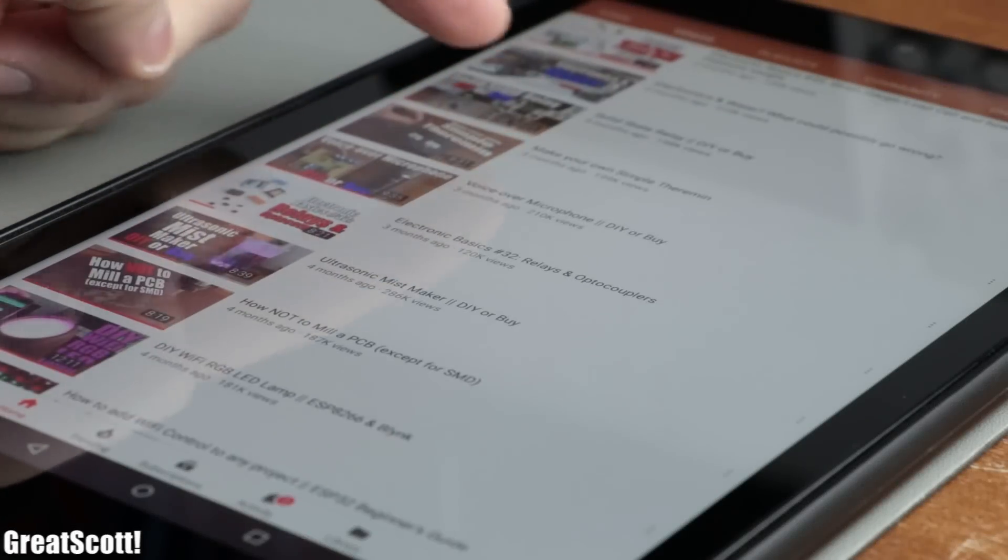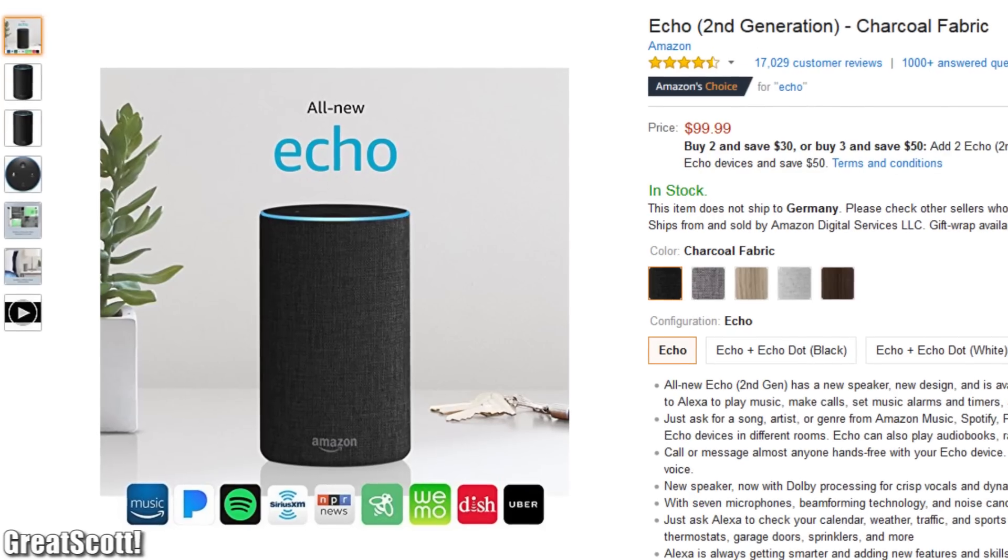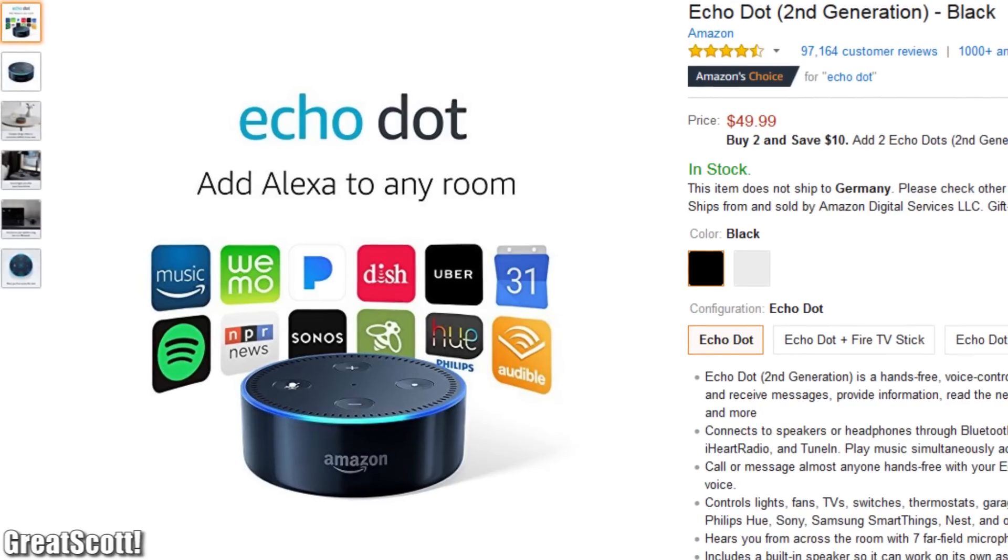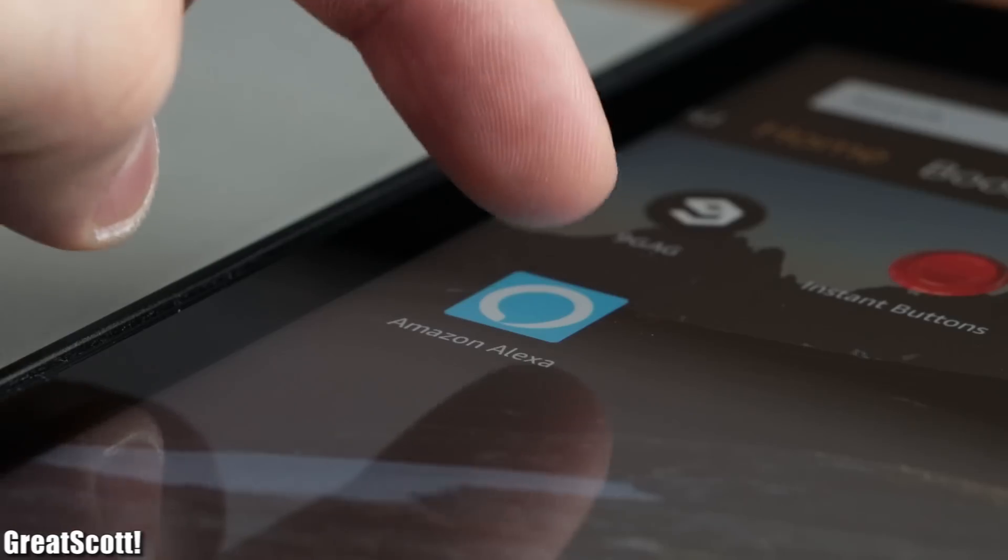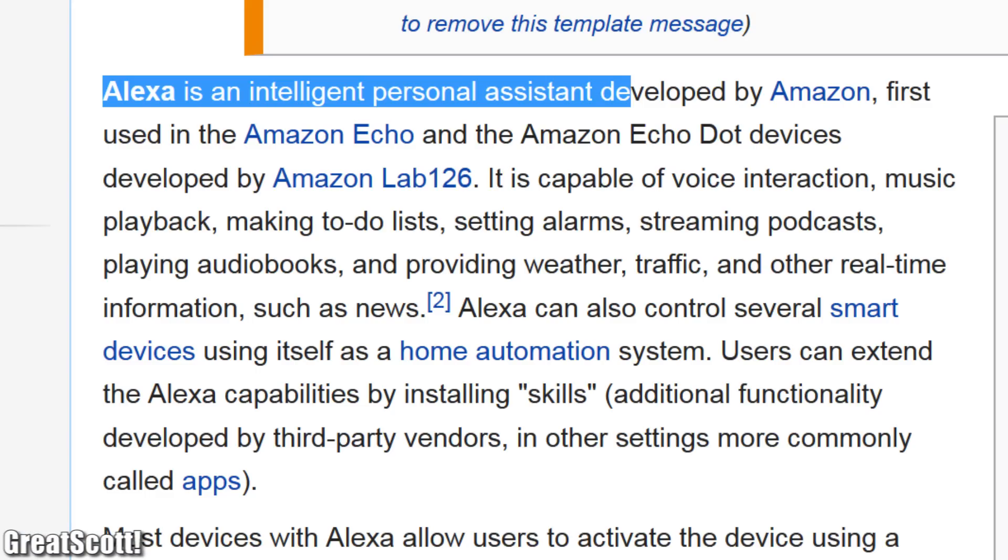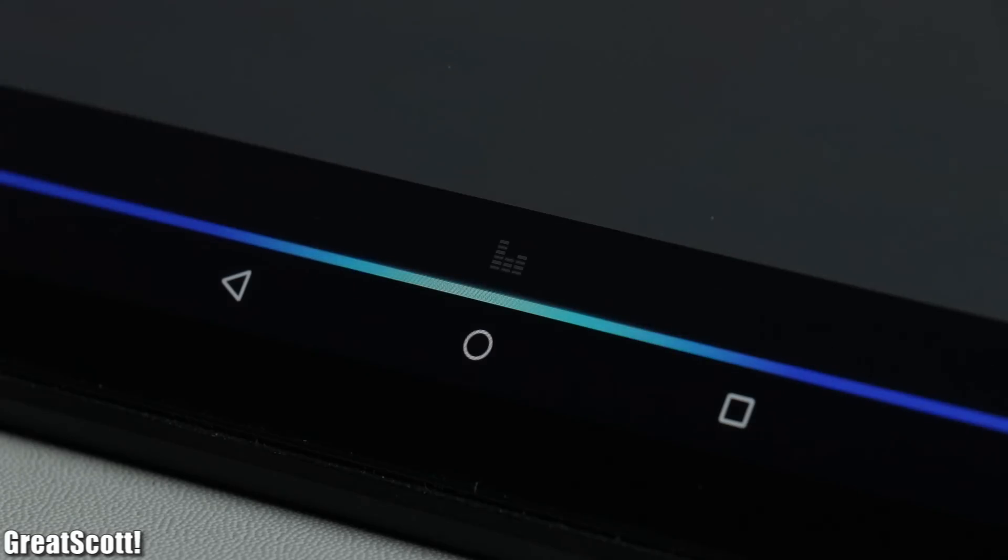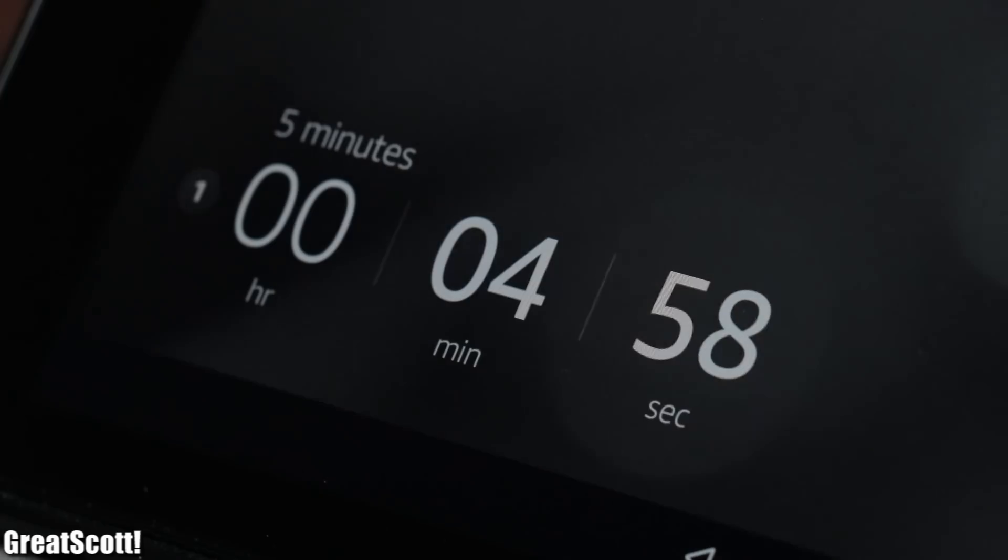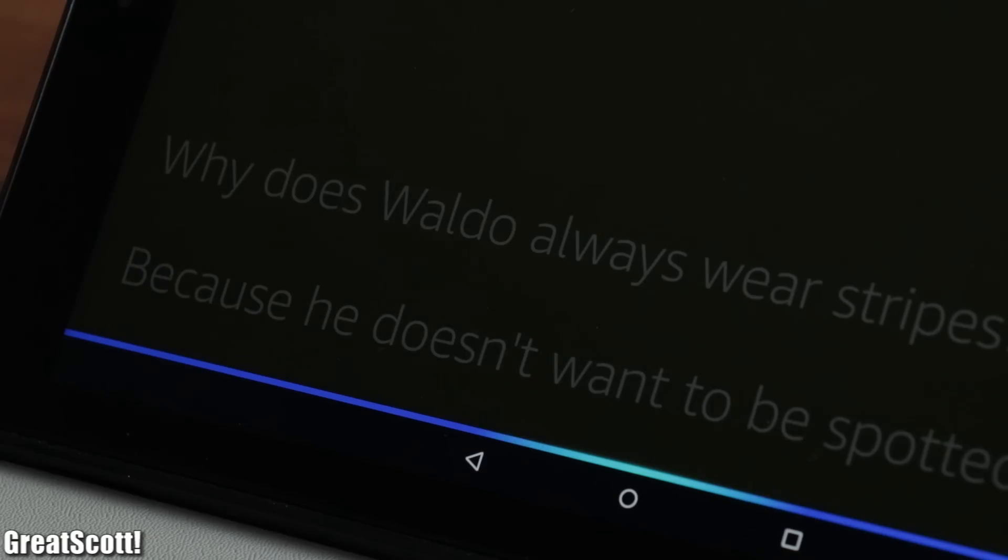If you own an Amazon Fire tablet like me or one of the other Amazon definitely not surveillance gadgets, then you might be familiar with Alexa. It is an intelligent personal assistant developed by Amazon which you can interact with verbally to for example set a timer or hear a funny joke.